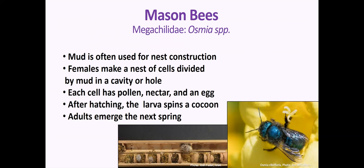There are over 3,500 species of native bees in the United States. Most people have no idea of the diversity of native bees — when they think of bees, they think of honeybees. Native bees have to some degree been understudied, but that is changing. To cover a few types: mason bees are called mason bees because they use mud in their nest construction, just like a brick mason. A female will make a nest of cells divided by mud — little cavities stocked with pollen, nectar, and an egg. The larva will hatch, eat those resources, spin a cocoon, and emerge the next spring.